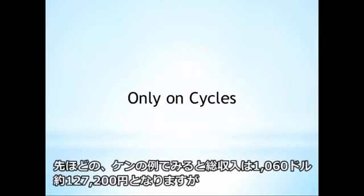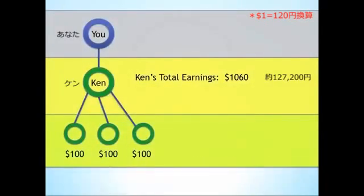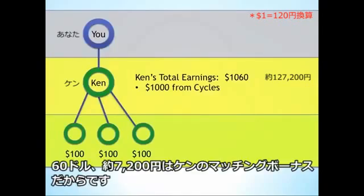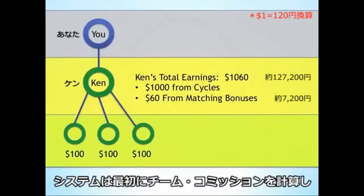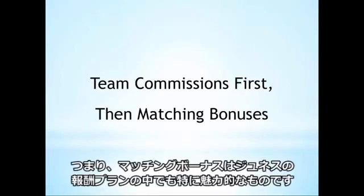If we looked at our previous example, even though Ken's total check would have been $1,060, you would only receive matching bonuses on $1,000 of that amount, since the $60 represents Ken's matching bonuses. Another way of thinking about this is that the computer calculates team commissions first, then goes back a second time and determines all the matching bonuses off that first independent commission run.